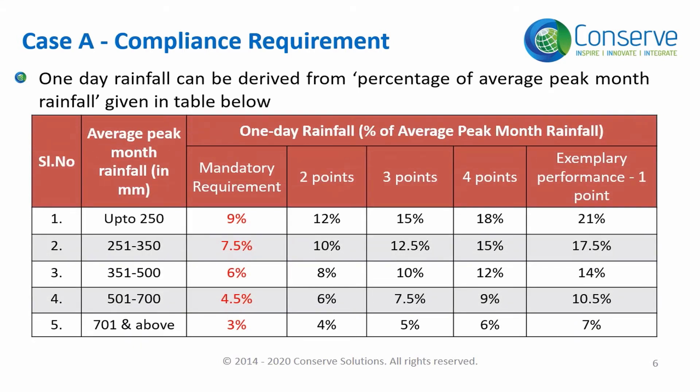To demonstrate compliance, the project has to design a rainwater harvesting system to capture at least one day's rainwater runoff or stormwater runoff from roof and non-roof areas. One day rainfall can be derived from a percentage of average peak month rainfall, as given in the table.